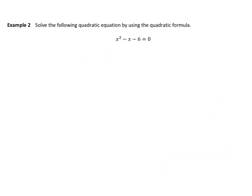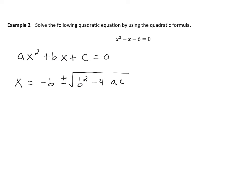So we have two methods: you can use a graph, or you can try to factor if possible. But there is another way — we can use the quadratic formula to solve a quadratic equation. If you have any quadratic of the form ax squared plus bx plus c equals 0, where a, b, and c are constants, the solutions are given by: x equals negative b plus or minus the square root of b squared minus 4ac, all divided by 2a. We already know the solutions to x squared minus x minus 6 are negative 2 and 3, so hopefully this method gives the same result.